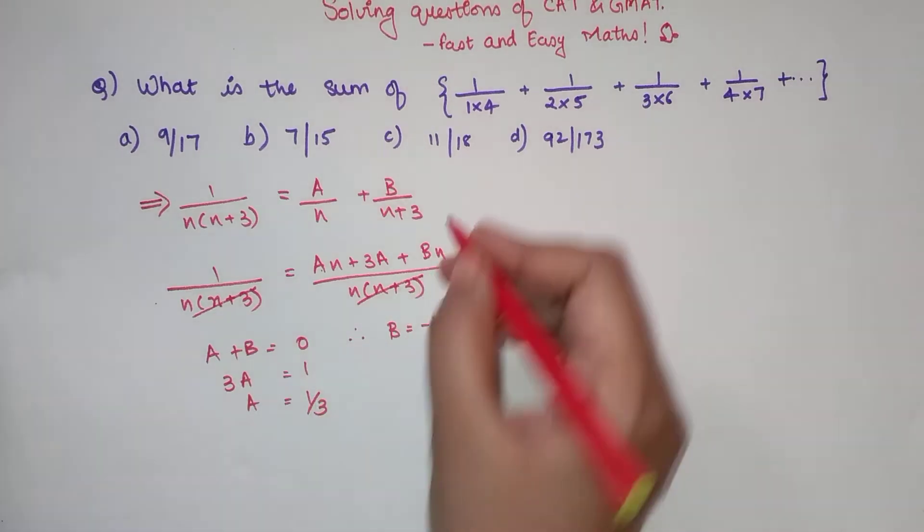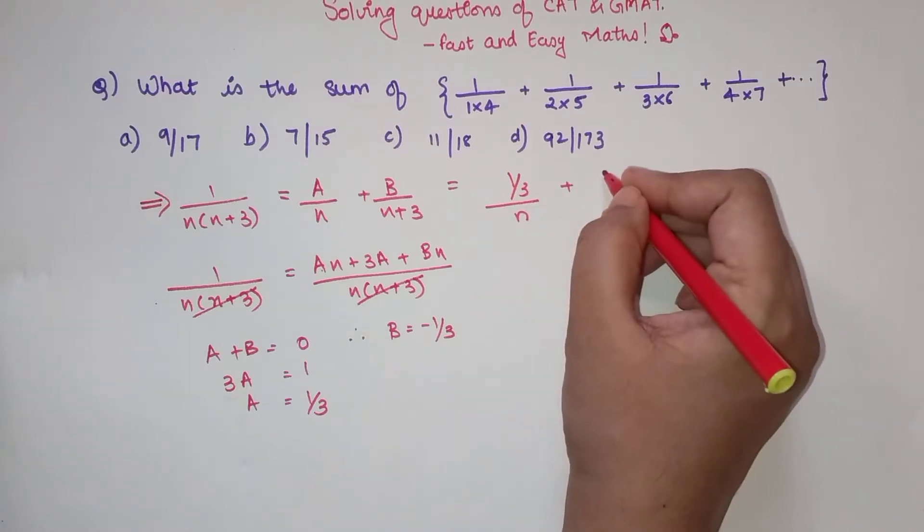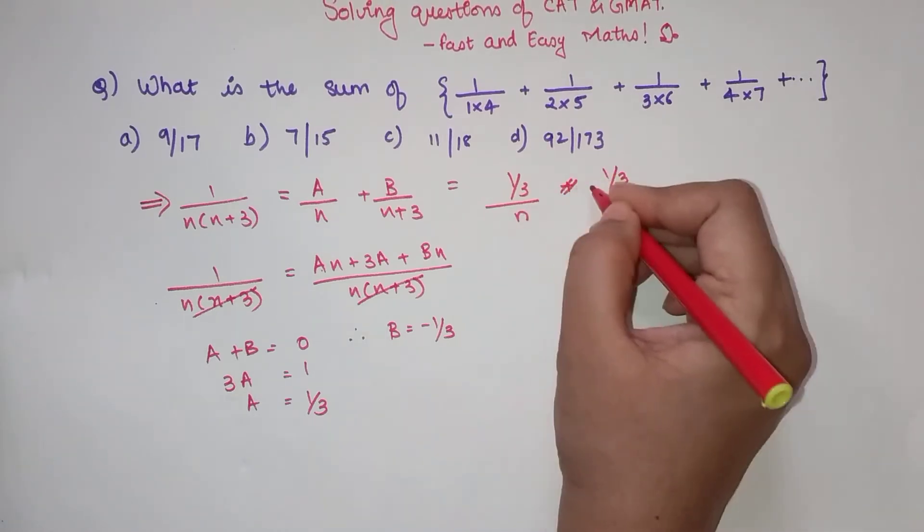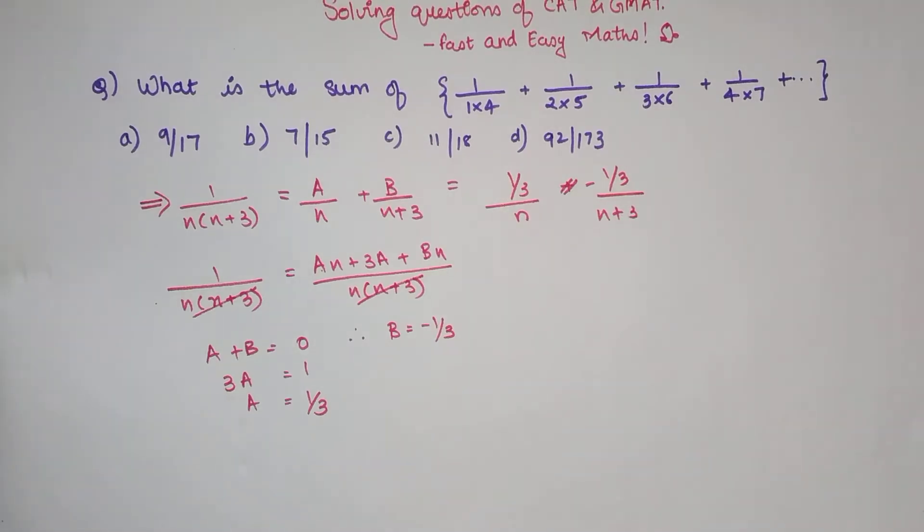Using these values over here, I can see my general form is 1 upon 3 upon N minus 1 upon 3 upon N plus 3.